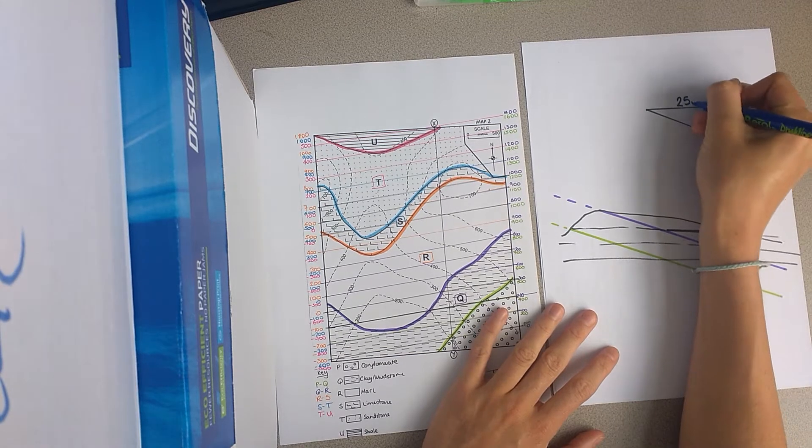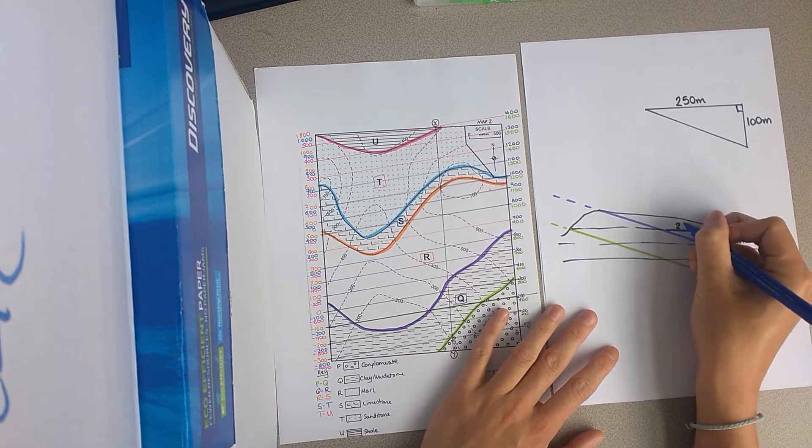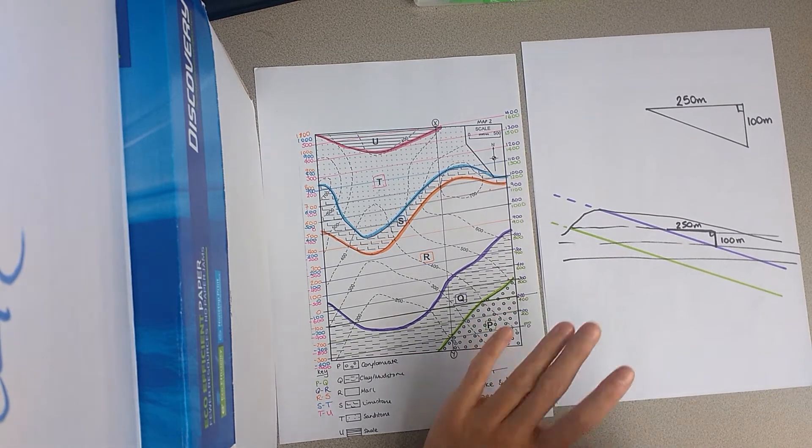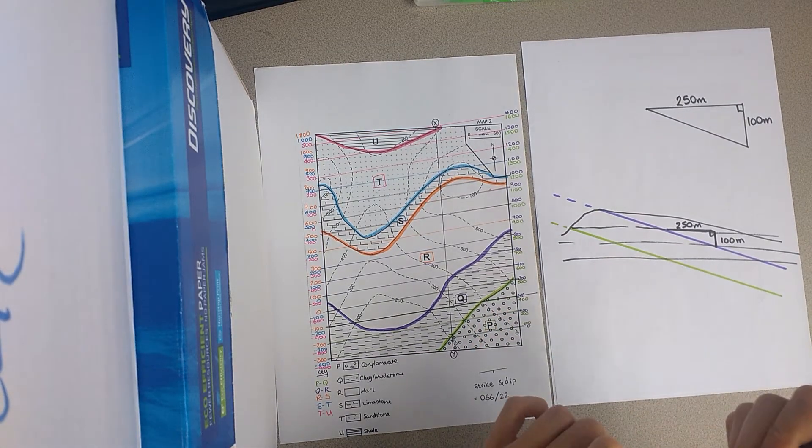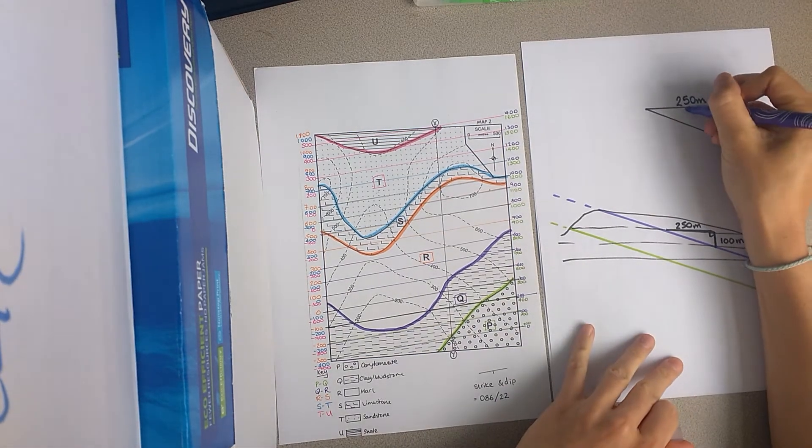So for 100 metres vertical distance, we have 250 metres horizontal distance. And we are interested in this angle here, alright?